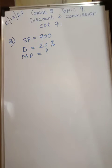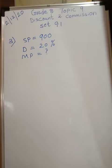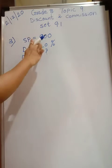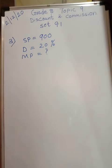Good morning Grade 8. The first two problems from 9.1 we have solved earlier. Let's go to the third problem now. The third problem says: if selling price is rupees 900 and discount is 20 percent, find the marked price.